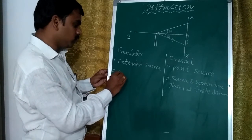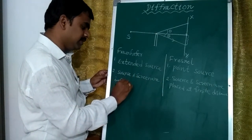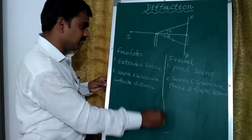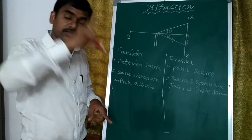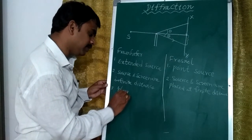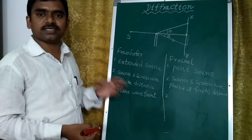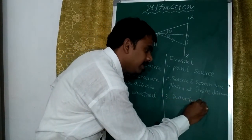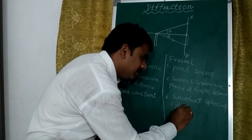In Fraunhofer diffraction, the source and screen are at an infinite distance from the obstacle or slit. Since the light is coming from a very long distance, it is converted into a plane wavefront. So in Fraunhofer diffraction the wavefront is a plane wavefront. In Fresnel's diffraction, since the source and screen are at a finite distance, the wavefront is either spherical or cylindrical.